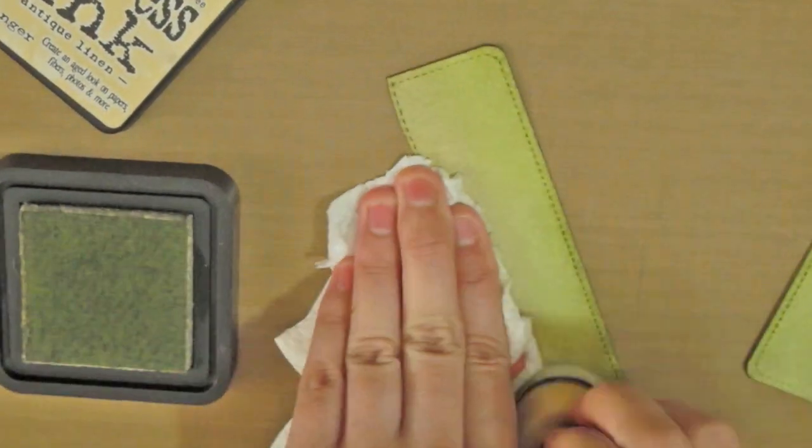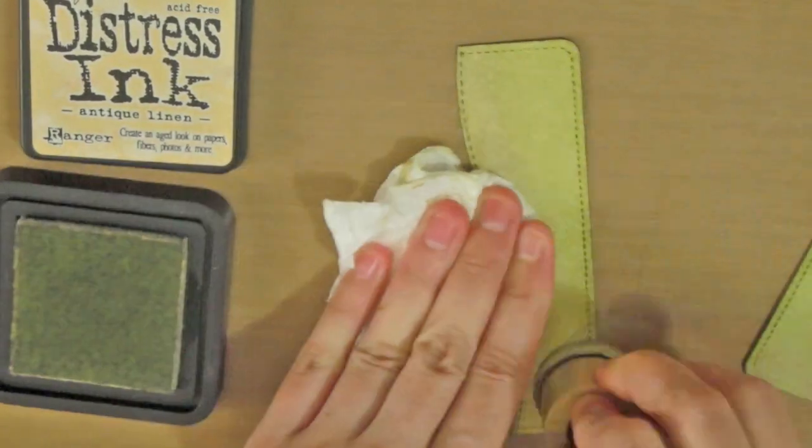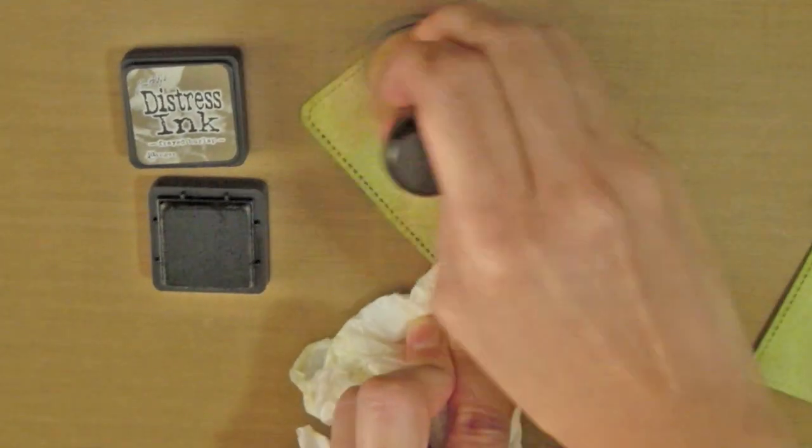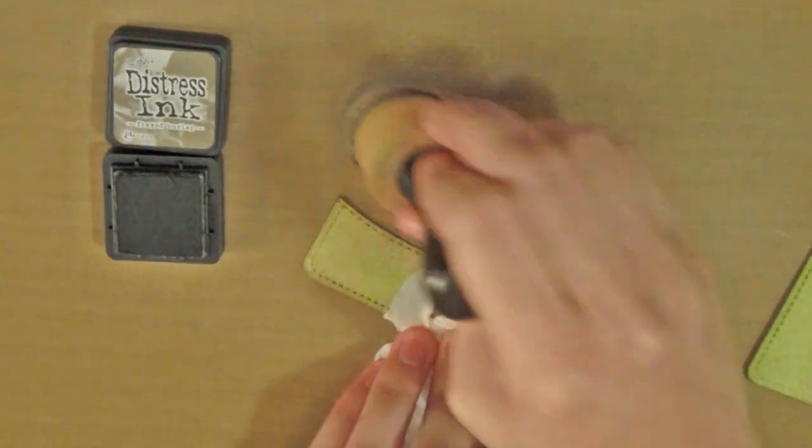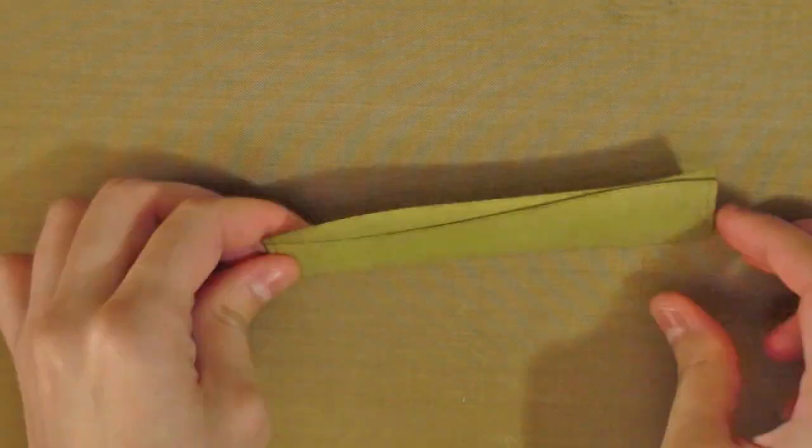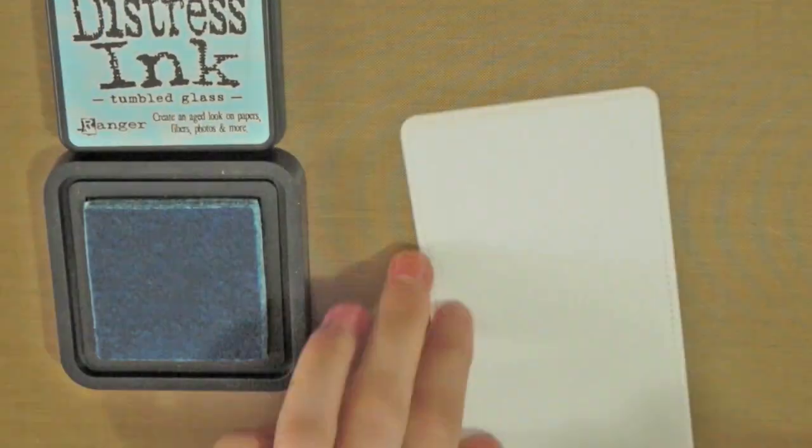Then, I decided to add some antique linen to the hills. I am adding it to the whole piece of paper. I will go back and forth with the colors until I am happy with the result.